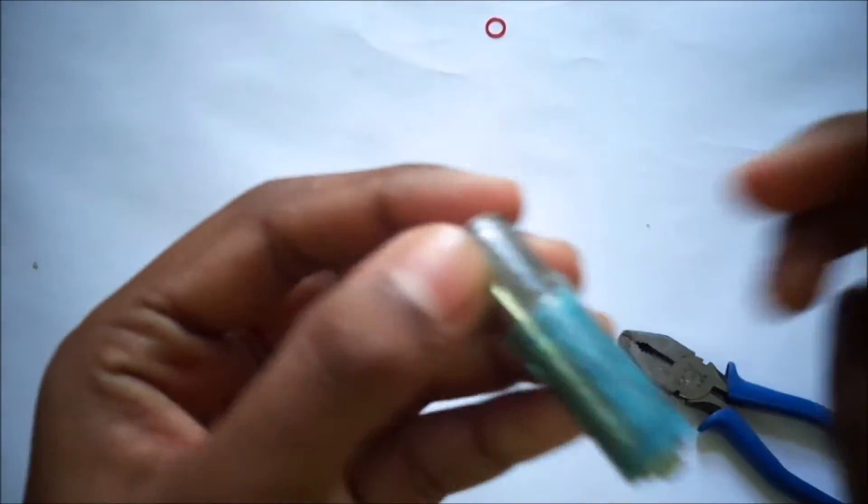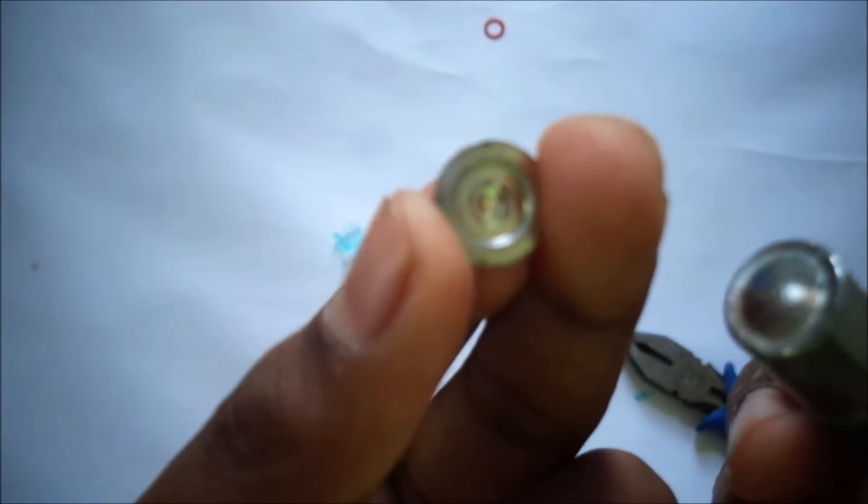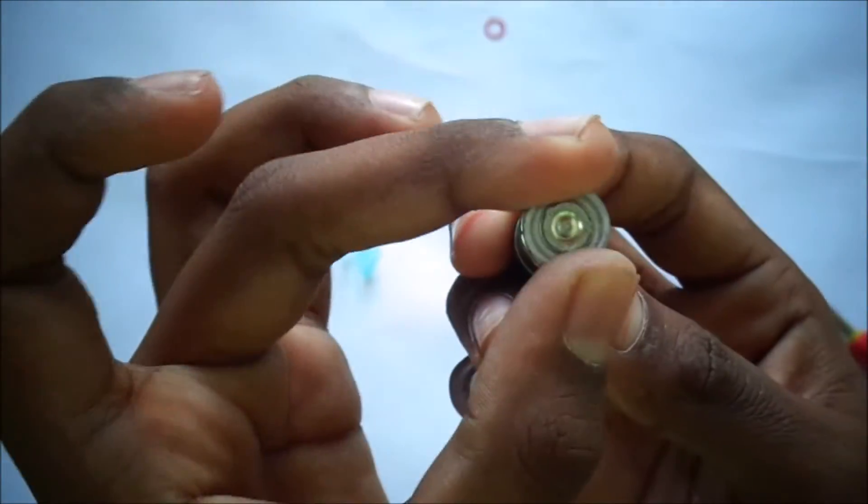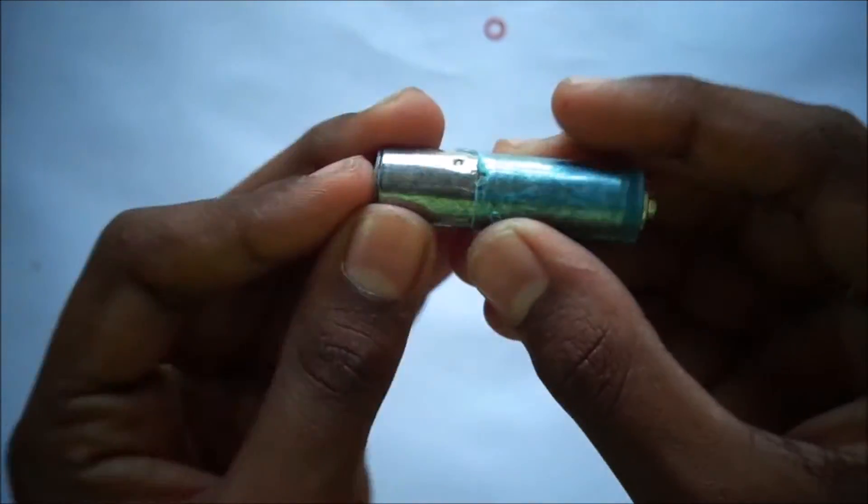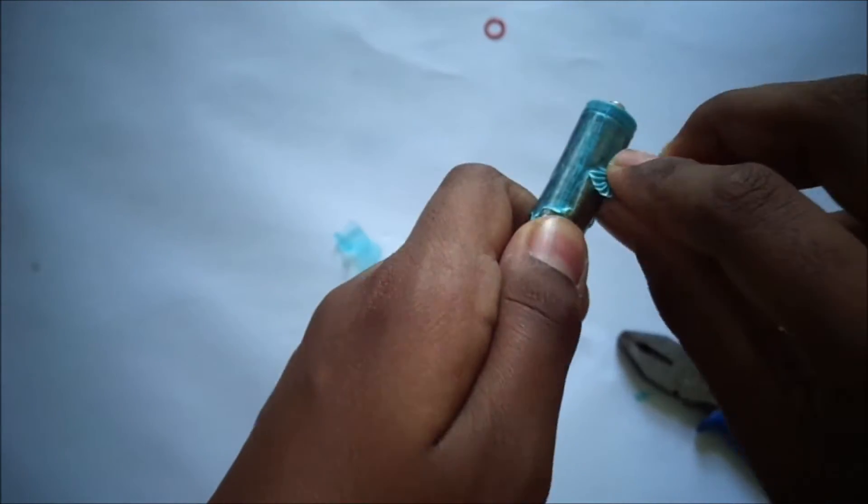This is the back part which I got over here. You can see from here this is the negative pole and this is the positive pole. I'll remove the full cover.